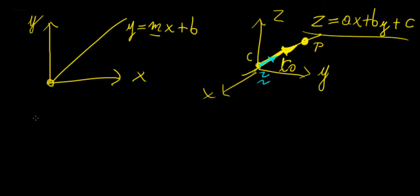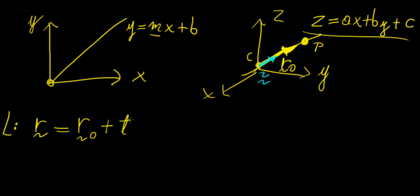We can express the equation of a line as a vector quantity: it's going to be equal to R naught, which is the vector pointing from the origin to some point P, plus t times V, where t is a parameter. This is how we parameterize the equation of a line in three dimensions. Parametric simply means that we're expressing everything in terms of a parameter that we choose.